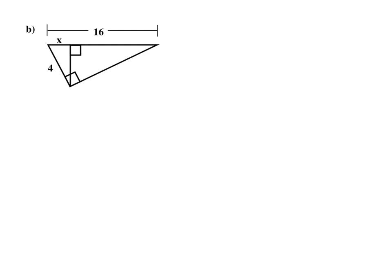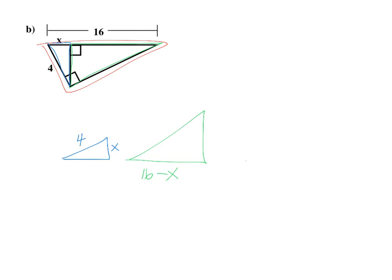Let's do another example. I have a right triangle and I'm drawing all triangles with the same orientation — it's easier to see how to set up the ratios. For the blue triangle, that's going to be x, the hypotenuse is four. This side here is 16 minus x. For the whole triangle, the hypotenuse is 16 and the shorter leg is four.